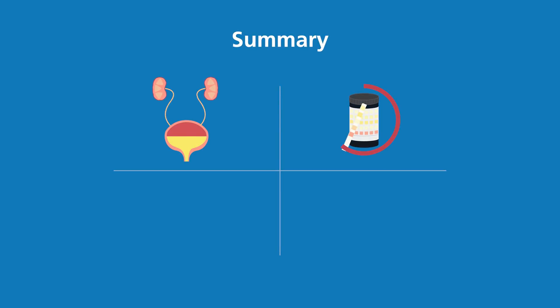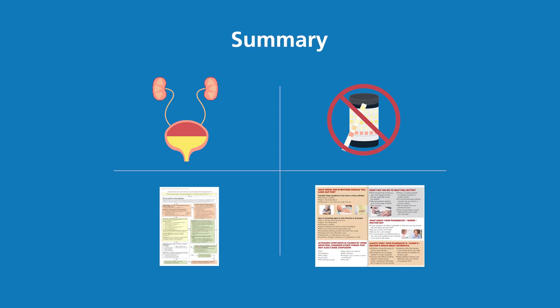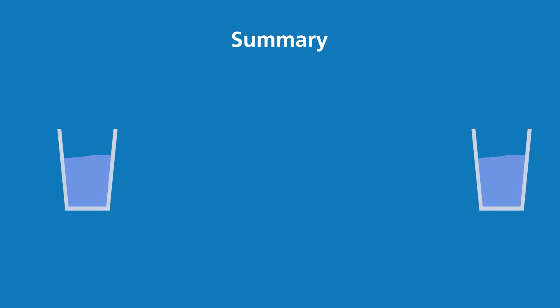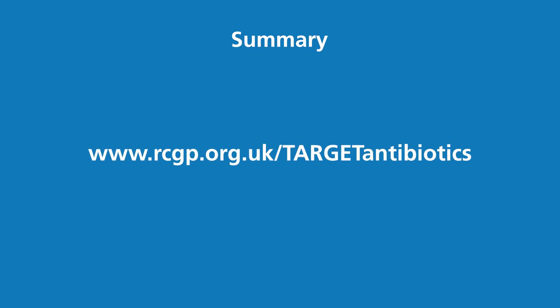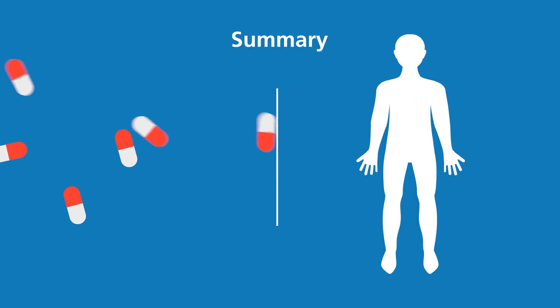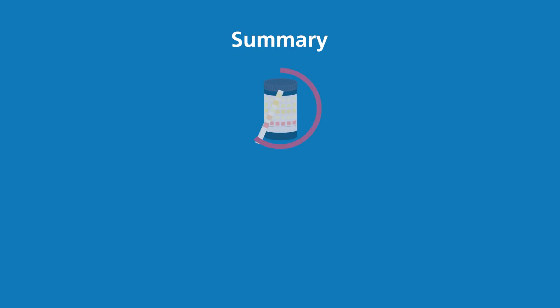In summary, we have discussed UTIs, how they occur, and how bacteria in the urine does not always mean an infection is present. We have covered the Public Health England flowchart on suspected UTIs in older people and how to use it, the Target UTI leaflet for older adults and their carers, and the importance of adequate hydration. These resources are free to access and can be printed out. By using the approaches discussed in this video, we hope you feel more confident in diagnosing and managing UTIs in older people, preventing dehydration, and the importance of using antibiotics carefully and safely.